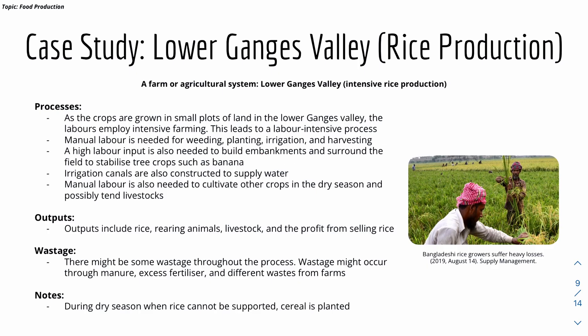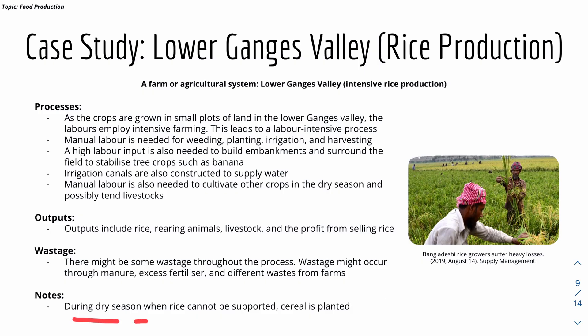Crops are grown in small plots where laborers employ intensive farming with high inputs per hectare. Manual labor is needed for weeding, planting, irrigation, and harvesting. Labor is also required to build embankments to stabilize crops such as bananas, dig irrigation canals, cultivate other crops in the dry season, and tend livestock on mixed farms. Outputs include rice, animals, and profit from selling rice. There is also wastage through excess fertilizer, livestock waste, or spoiled crops. During the dry season, cereal is planted instead of rice, which requires a lot of water.